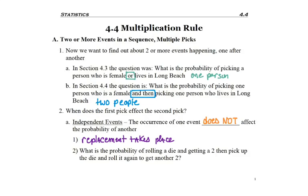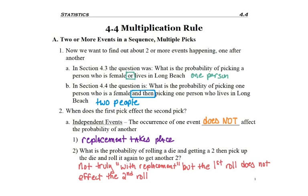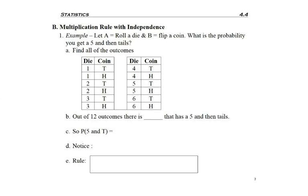We've replaced the first pick. I give another example here: What is the probability of rolling a die and getting a two, then you pick up the die and roll it and get another two? We don't say replacement took place in the sense it's not like we peeled the two off one side of the die on the first roll, but we still consider these two independent events. It's not truly with replacement, but the first roll had no effect on the second roll.